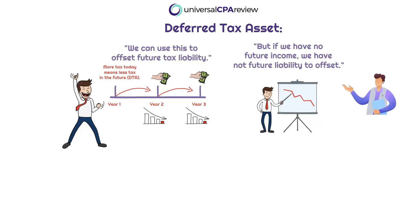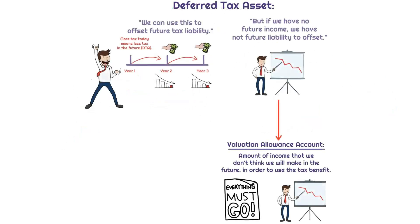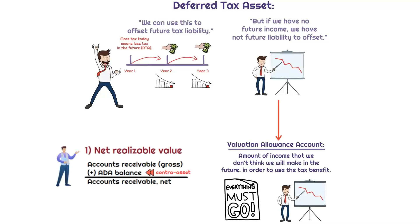But there is a situation where this deferred tax asset is not going to get used in the future. If for whatever reason the company doesn't expect to make money in the future, then there's no income to be taxed, which means that this deferred tax asset is not getting used. In this case, we have what's referred to as a valuation allowance account. This is the equivalent to your allowance for doubtful accounts — those represent the portion of the receivable that we do not believe we will collect. So think of the valuation allowance as the portion of income that we do not think we will make in the future to be taxed. Same concept as allowance for doubtful accounts.